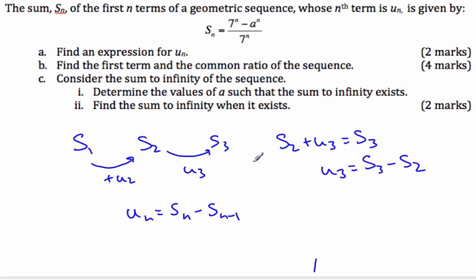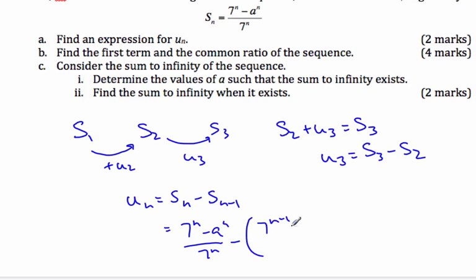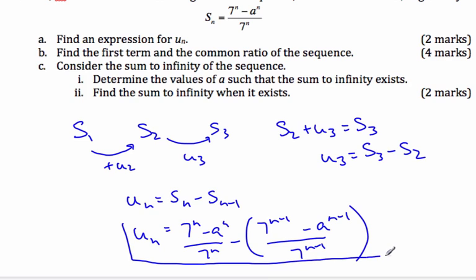Plugging in the values we know, this is the same as saying: 7^n minus A^n over 7^n, minus the quantity 7^(n-1) minus A^(n-1) all over 7^(n-1). And that is U_n — that completes Part A.